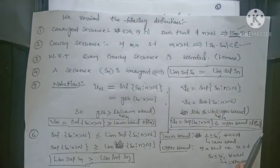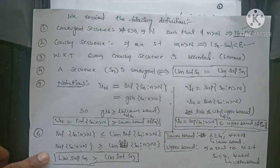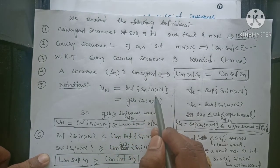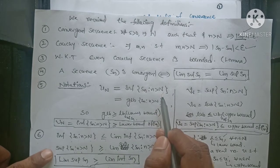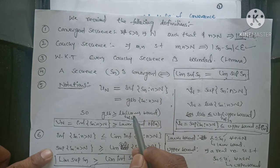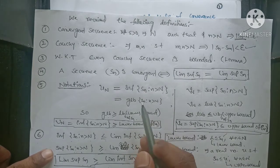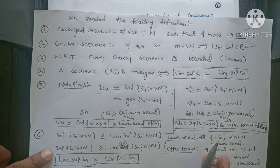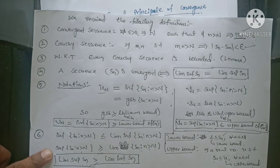Now we need some notations for proving this theorem. Un means the infimum of Sn for n greater than capital N. What is the infimum definition? The greatest lower bound of a sequence Sn is called the infimum of the sequence, denoted by Un. Suppose L is a lower bound of a sequence; any number smaller than L is also a lower bound. Out of all these lower bounds, the greatest number is called the greatest lower bound, denoted by infimum.